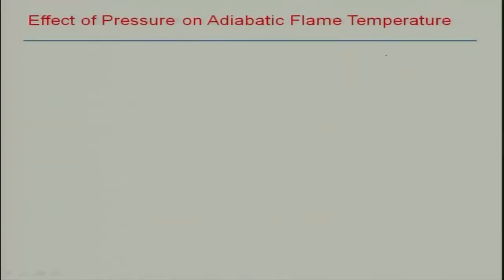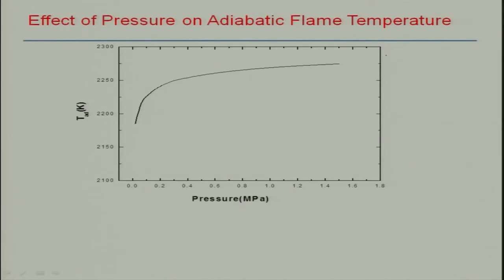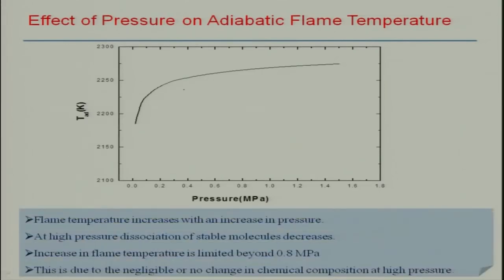Now let us look at the effect of initial pressure. If you look at the initial pressure of the reactants, there is a steep increase in the adiabatic temperature at lower pressures. However, when it reaches around 0.8 MPa there is not much change — there is a slight change but at a much higher level. This is because the change in chemical composition at high pressure will be negligibly small.